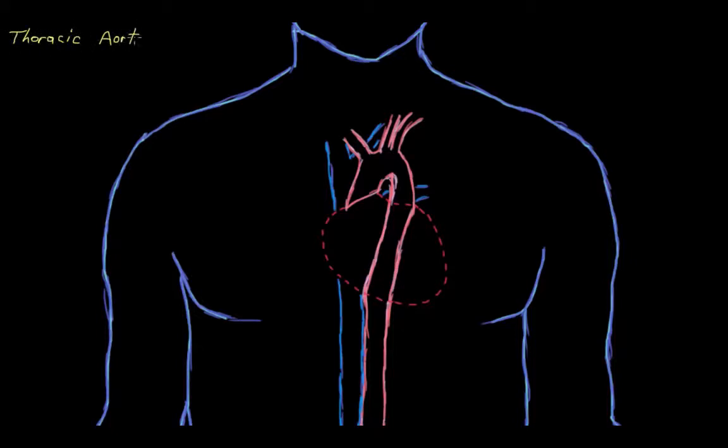What is a thoracic aortic aneurysm? Well, let's break that down. An aneurysm is a permanent, localized dilation of something. In this case, of the aorta, which is the main artery in our bodies.